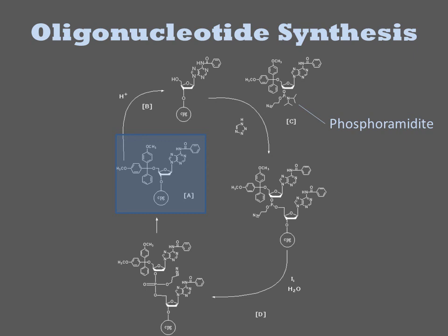This coupling step creates the bond between the backbone phosphate and the 5' hydroxyl. Note that there are only three oxygens on this phosphorus atom — it is in a different oxidation state than the phosphate in the desired DNA.